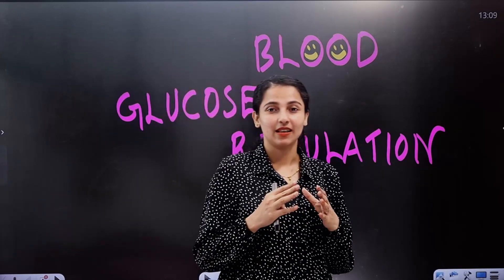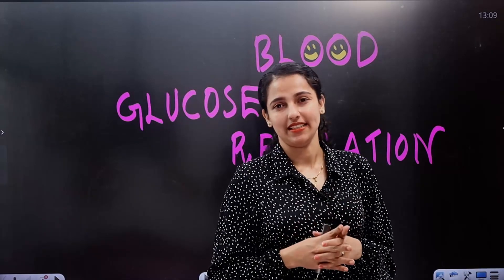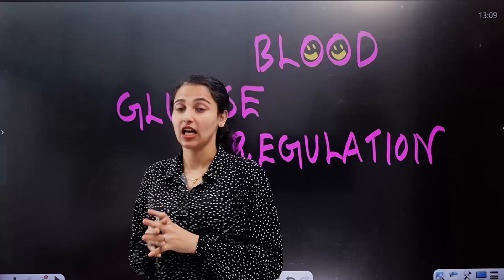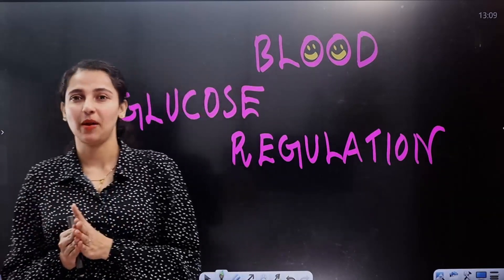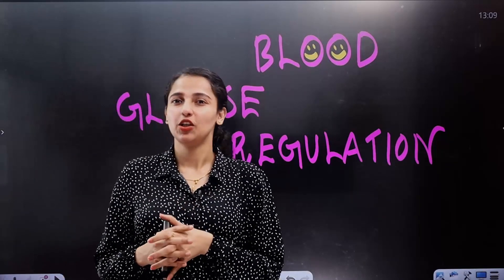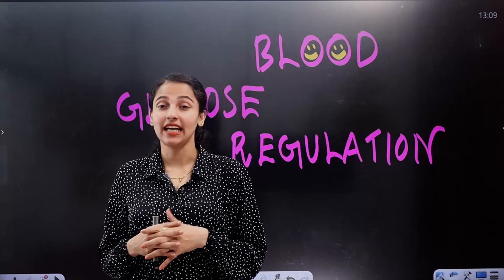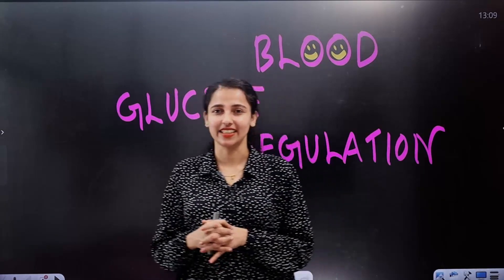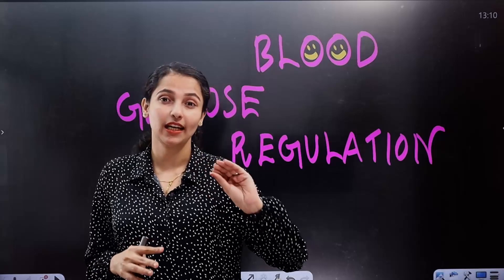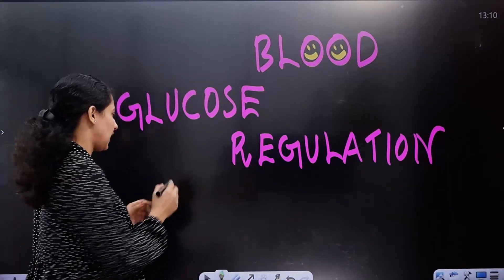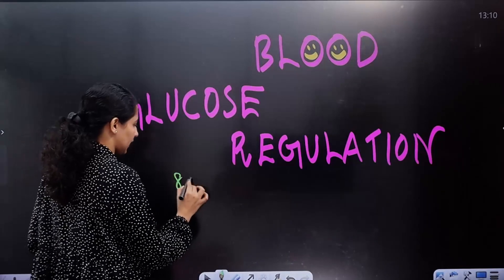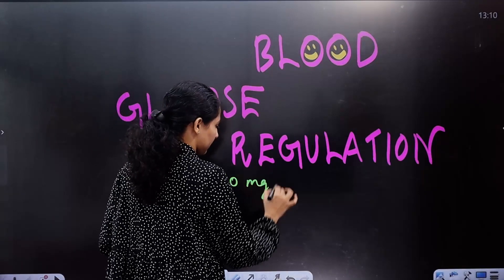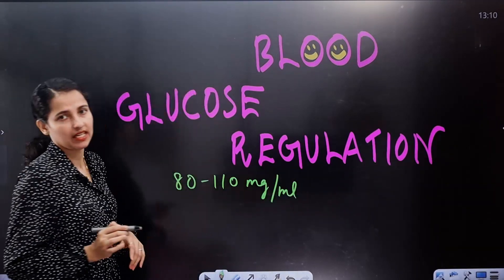We are going to talk about chemical coordination and control. In this chapter, we are going to learn how our blood glucose level is regulated. The normal blood glucose level is 80 to 110 mg per ml.